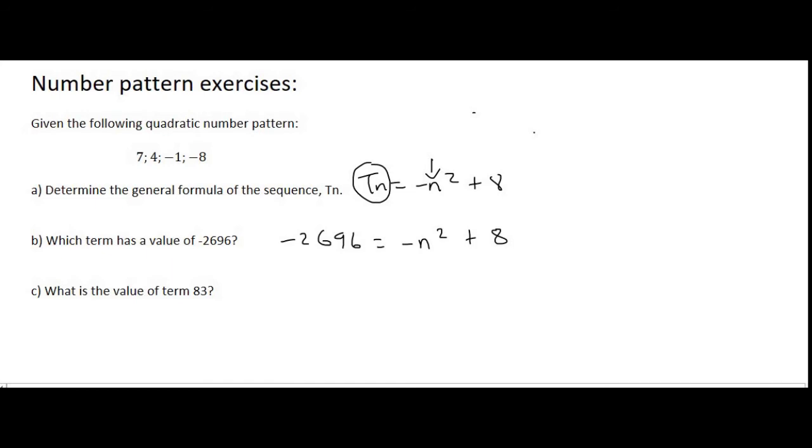Now we just realized that it's a quadratic. And so I'm going to take everything to the left, but you can definitely take things to the right as well. And so if I bring that minus N squared over, it becomes N squared minus 2696 minus 8 equals 0. And that's going to give us N squared minus 2704.